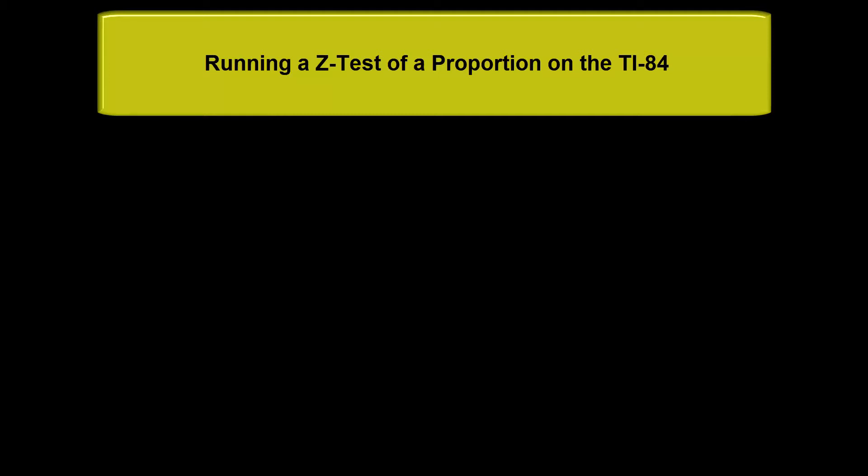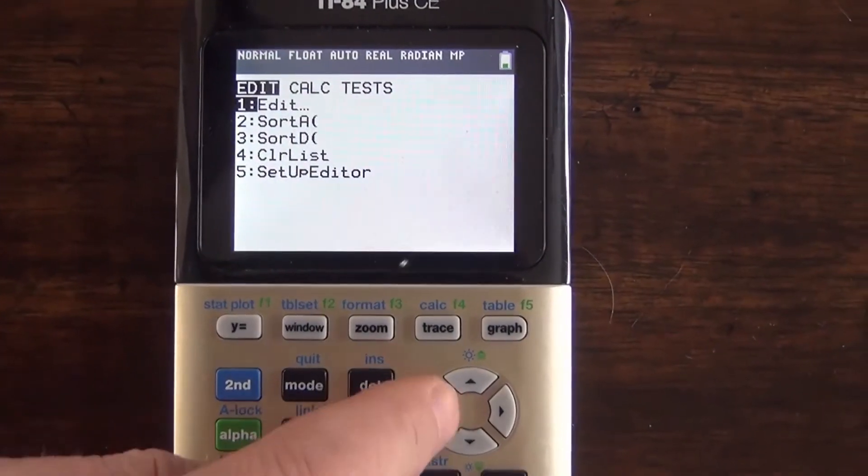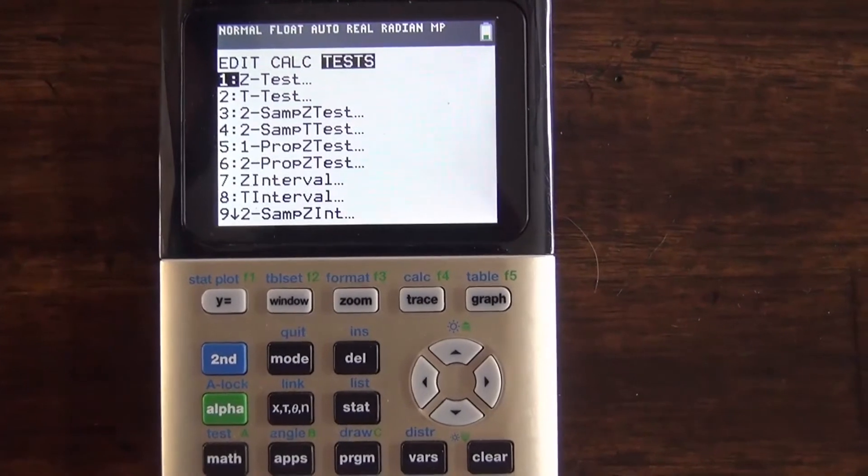Where we're going to start is going to the stat button and get the arrow over to tests and then we're going to hit option 5 for one proportion z-test.